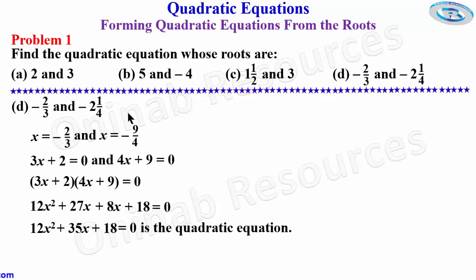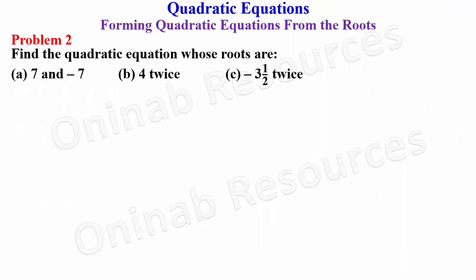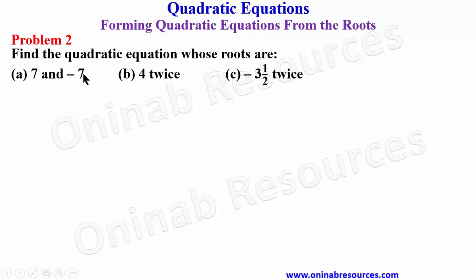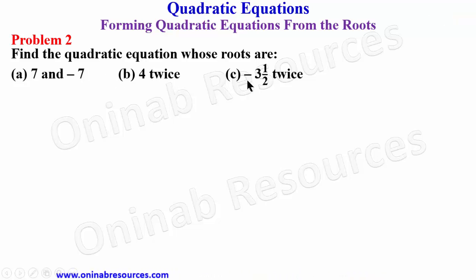We then move to problem two: find the quadratic equation whose roots are (a) 7 and negative 7, (b) 4 twice, and (c) negative 3 and a half twice.